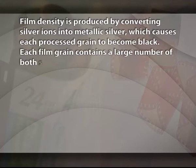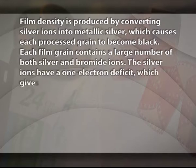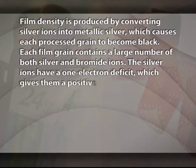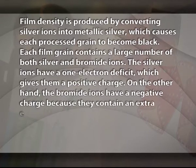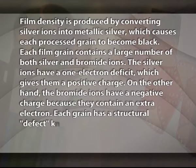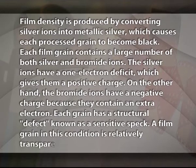Each film grain contains a large number of both silver and bromide ions. The silver ions have a one-electron deficit, which gives them a positive charge. On the other hand, the bromide ions have a negative charge because they contain an extra electron. Each grain has a structural defect, known as a sensitive speck. A film grain in this condition is relatively transparent.